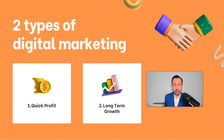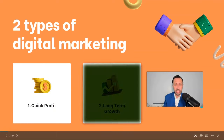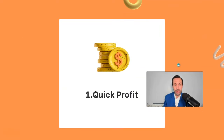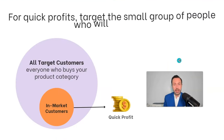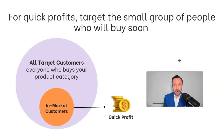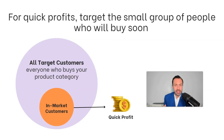There are basically just two types of digital marketing: digital marketing designed to generate quick profit, and digital marketing designed to generate long-term growth. We're going to start by talking about how to generate quick profit. The key to success is looking at your entire target audience and identifying a tiny subset — the people that are in market, actively looking to buy something — and focusing on that very tiny fraction.